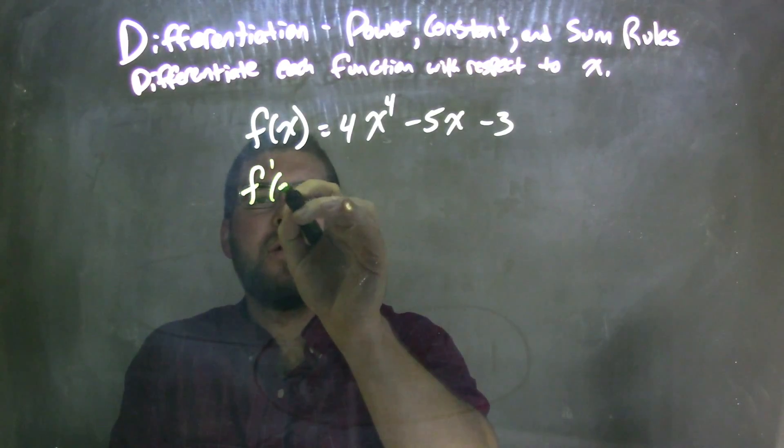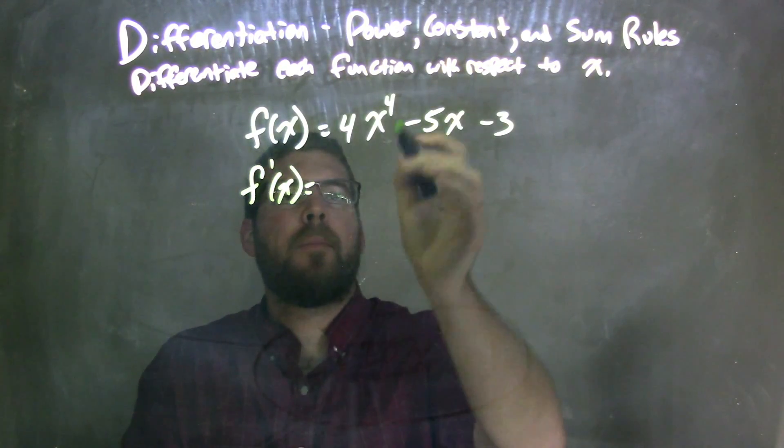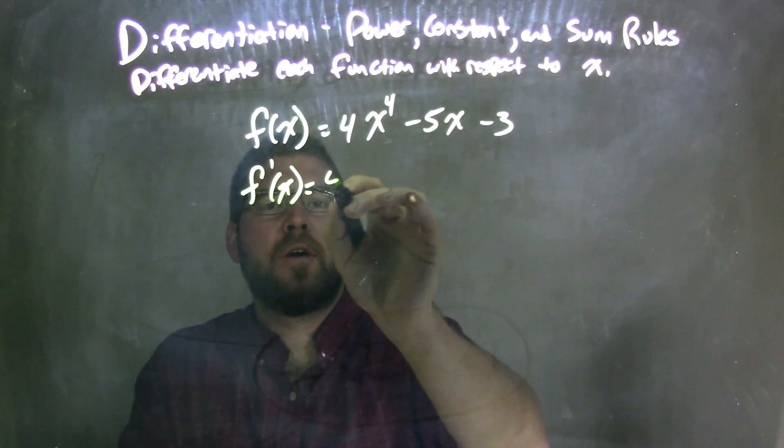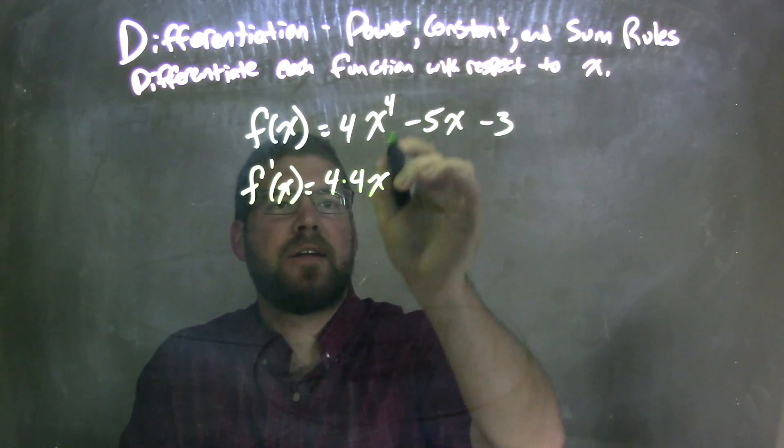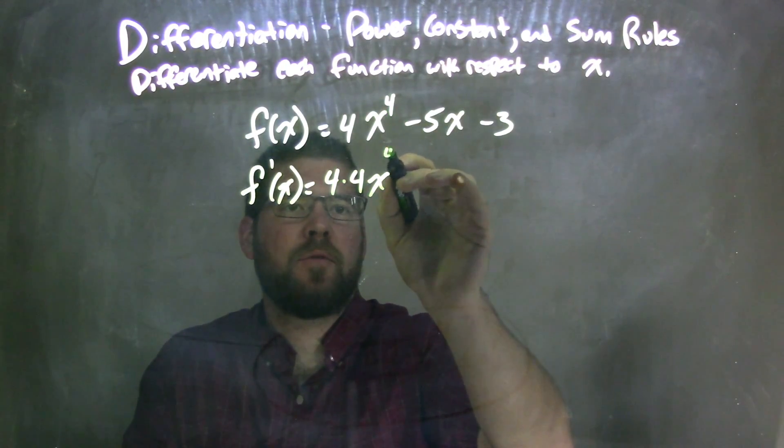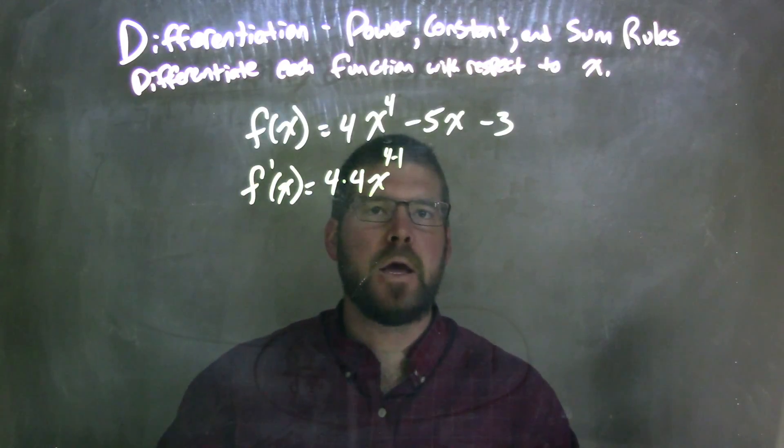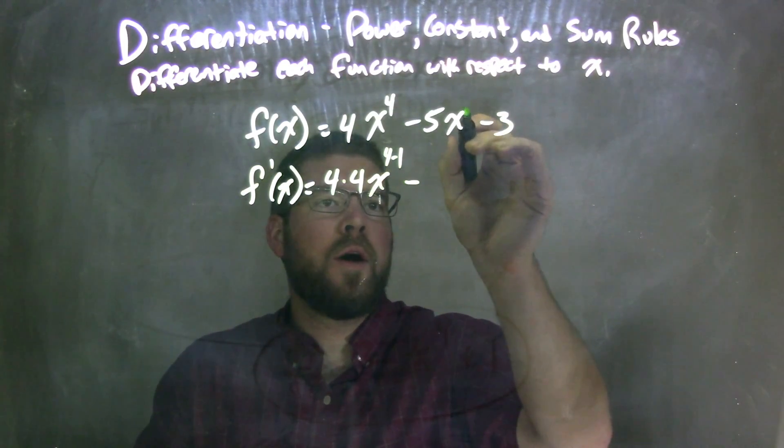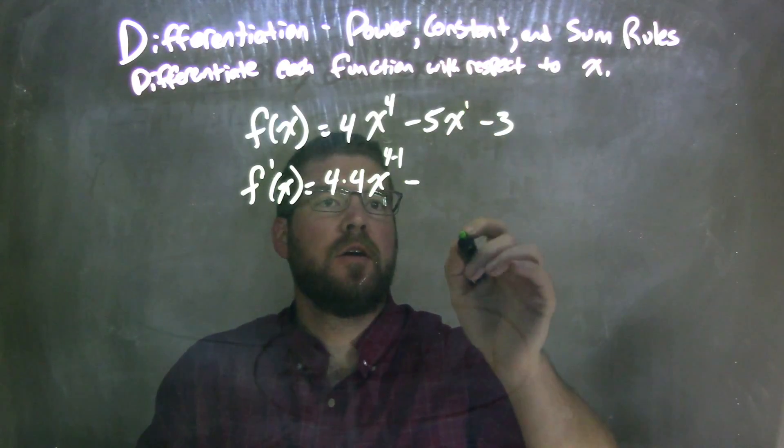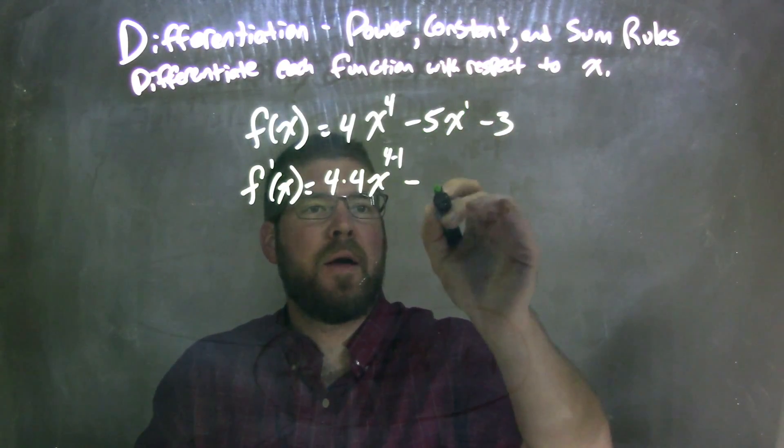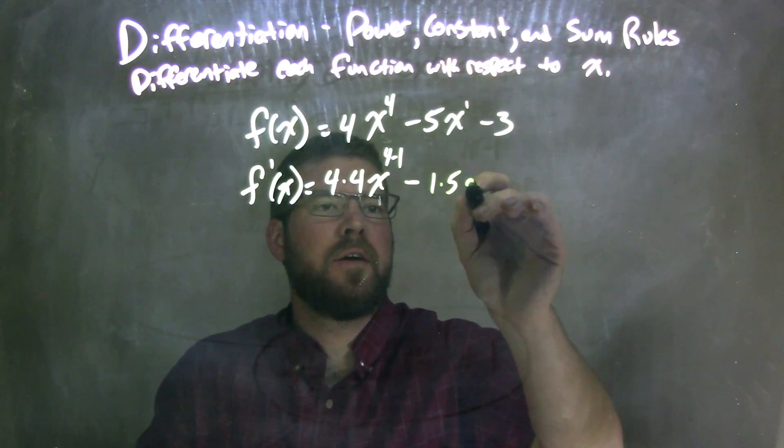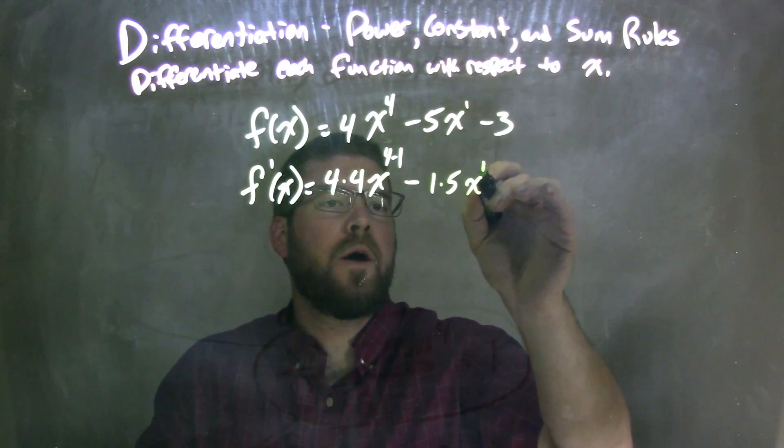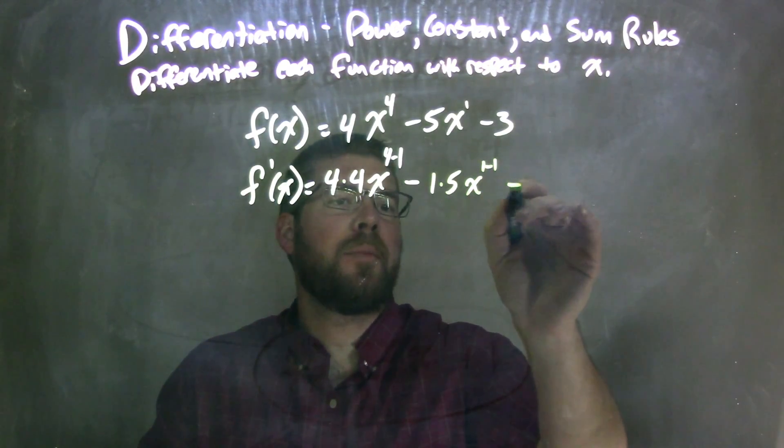So if I'm going to find f prime of x here. Power rule states I bring this 4 down up front, 4 times 4x, and I take the exponent back 1, so we'll do 4 minus 1. Then I do the same thing here, minus the 5, there's a 1 up front here. So power rule says I bring down that 1, so 1 times 5x to the 1 minus 1 power, and then minus...